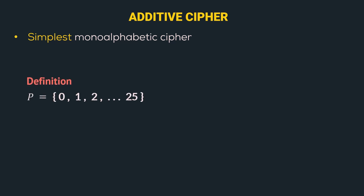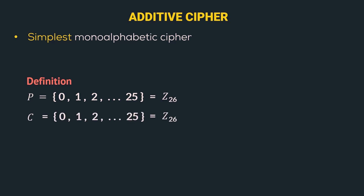In an additive cipher, the plain text can take values from 0 to 25, where 0 represents lowercase alphabet A, one represents lowercase alphabet B, and so on till 25 represents lowercase alphabet Z. From the previous video, we know that such a range of values is represented by Z26. The ciphertext also has the same range, i.e. 0 to 25, represented by Z26.